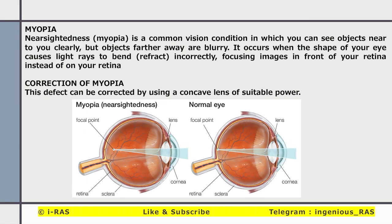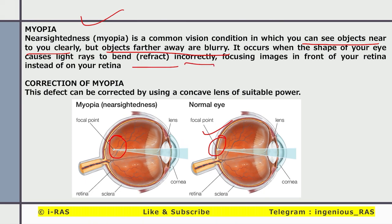A common refractive defect is myopia, also known as near-sightedness — a common vision condition where objects near to you are seen clearly, but objects farther away are blurry. In a normal eye, the focal point is on the retina. However, in myopia, the image is formed in front of the retina. This occurs when the shape of the eye causes light rays to refract incorrectly, focusing the image in front of the retina instead of on it. Myopia can be corrected by using a concave lens of suitable power.